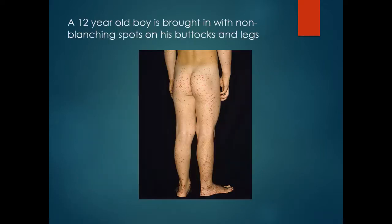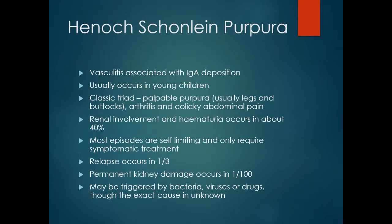A 12 year old boy is brought in with non-blanching spots on his buttocks and legs. Non-blanching spots on the legs, otherwise known as painful purpura, are due to vasculitis resulting in bleeding under the skin. In this case it is Henoch-Schönlein purpura, or vasculitis.